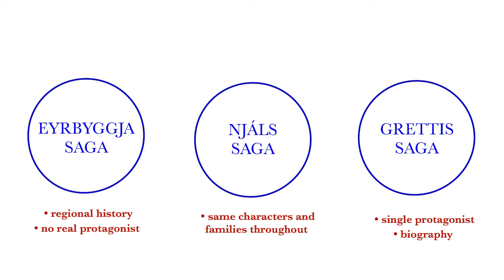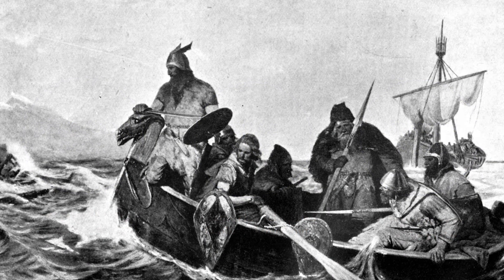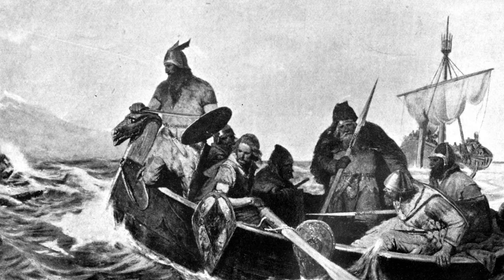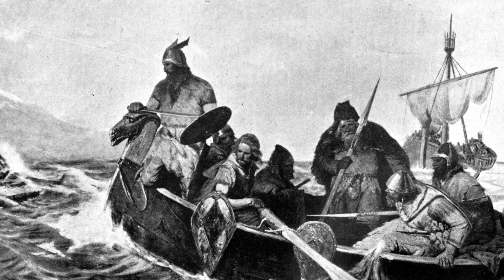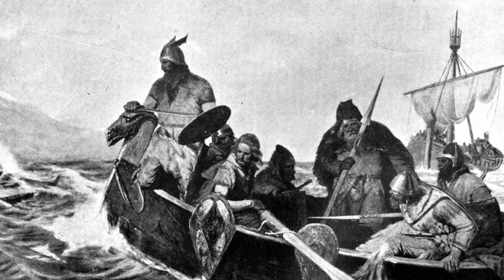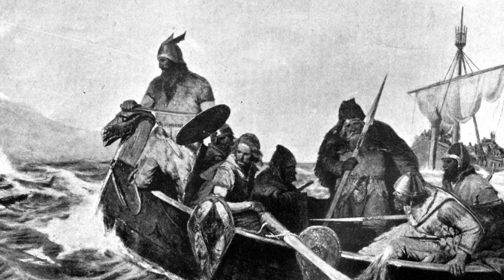Eyrbyggja saga is the regional history of a certain district, and the place itself is what keeps the storyline together. It has no real protagonist and the structure is highly episodic. Njáls saga is different — it has a more explicit narrative thread and centers around the same characters throughout. Grettis saga has a single protagonist and could even be called a biography. On the whole, sagas of Icelanders happen mostly in Iceland, with occasional trips abroad, and the characters are mainly historical individuals who lived in the country. The events are set between the settlement of Iceland, which began in the 870s, and the country's conversion to Christianity, or a few decades after it. The conversion happened around the year 1000 AD.